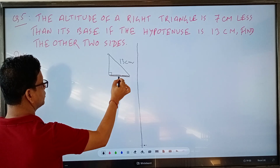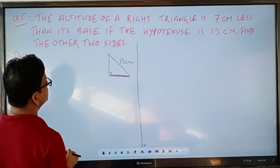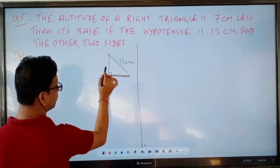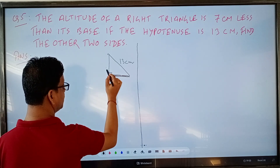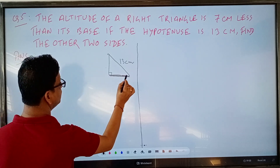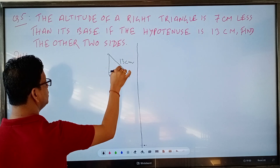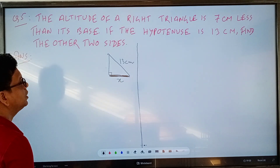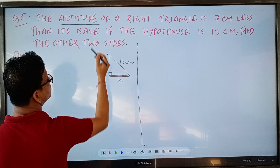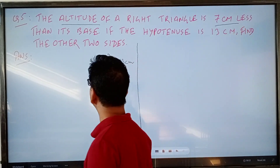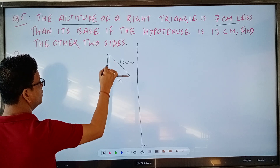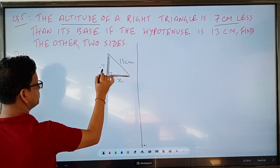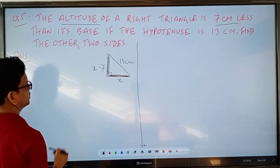Since the altitude is 7 cm less than the base, the altitude is dependent on the base. The base is the independent variable. So let the base be x. If the base is x, then the altitude — being 7 cm less than the base — will be x minus 7.